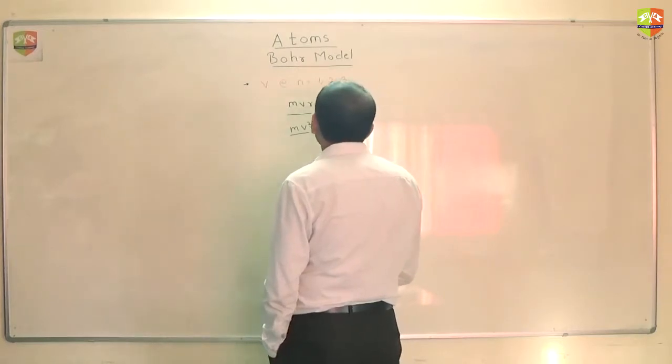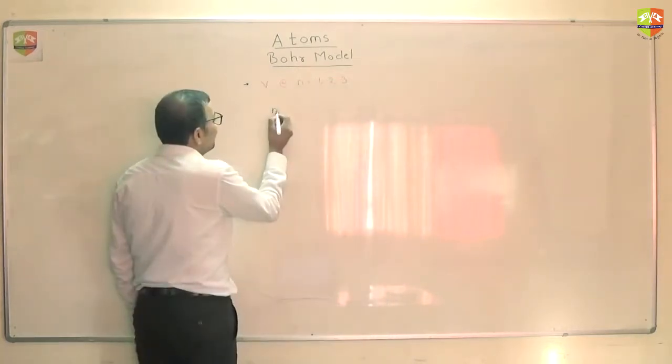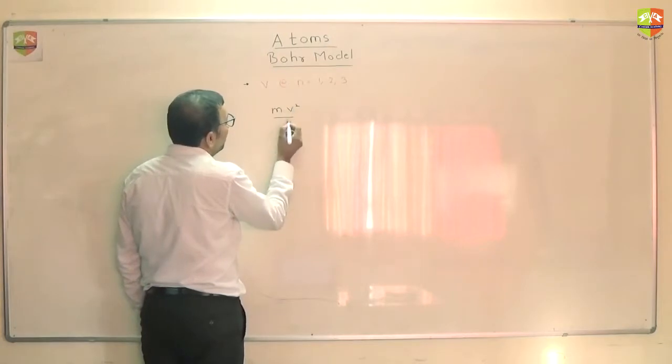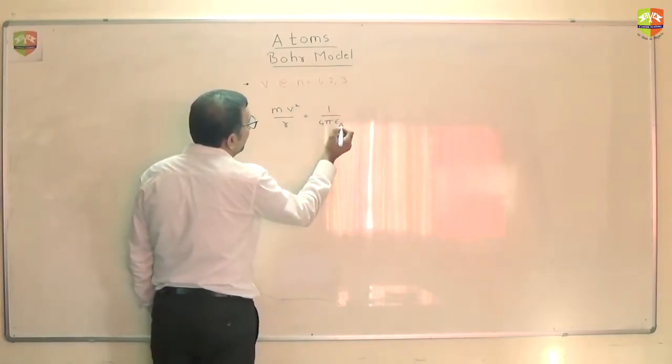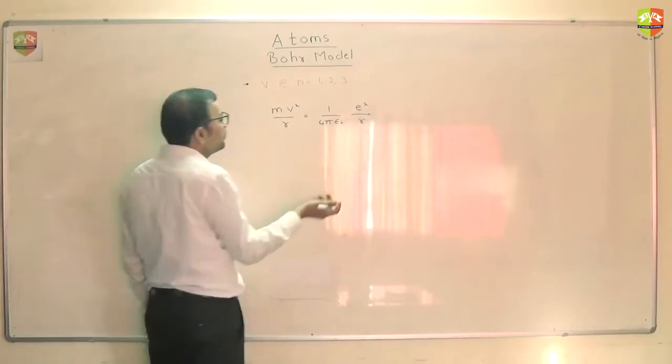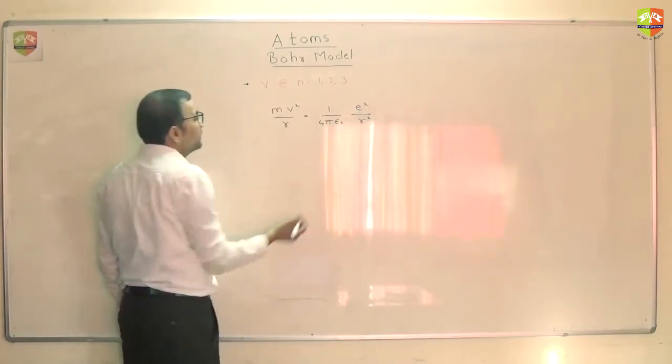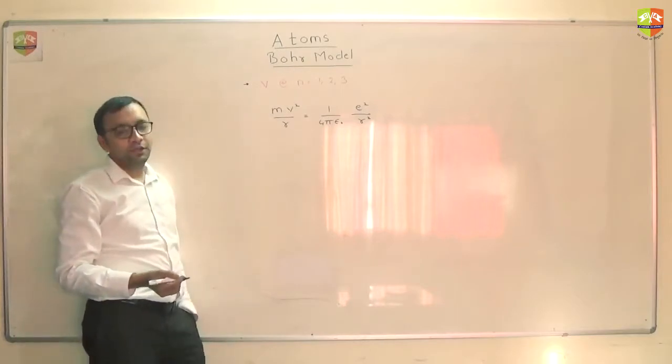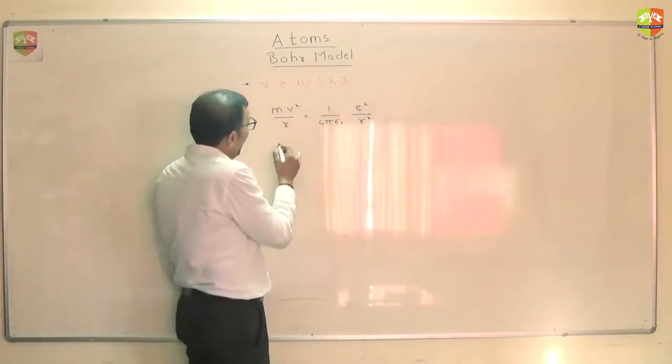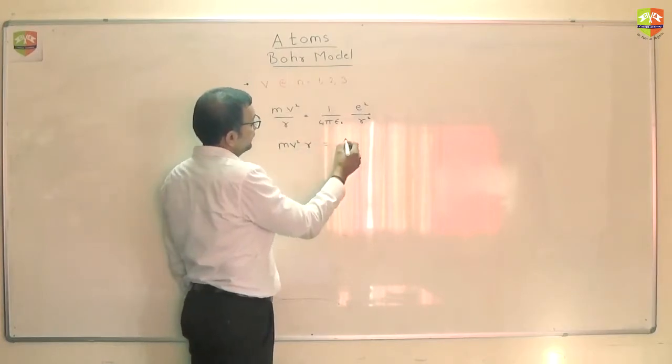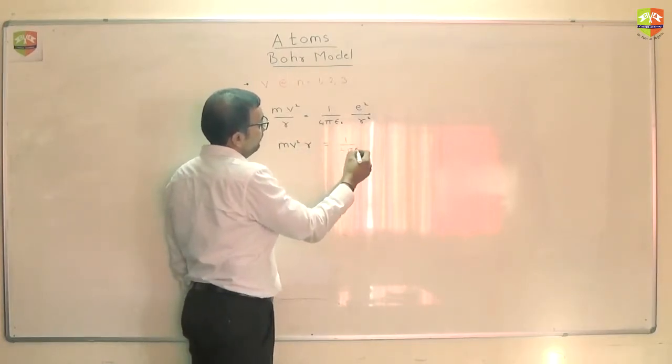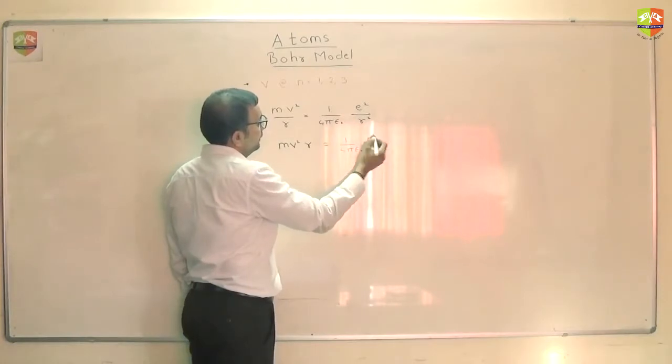No something is wrong. mv² by r is 1 by 4π epsilon naught e² by r². I am assuming it is e² by r². I am assuming it to be hydrogen atom.